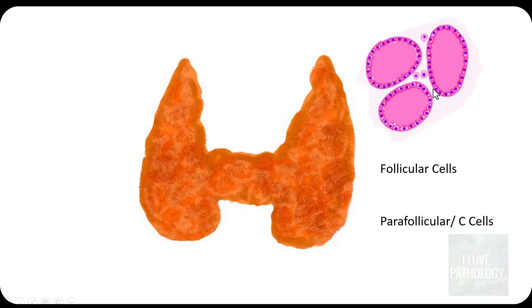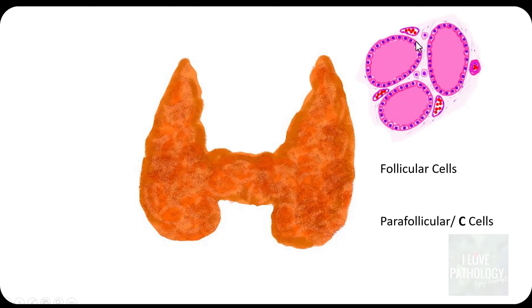The second important type of cells are the parafollicular cells. They are called parafollicular because they are situated next to, adjacent to, these thyroid follicles. They are also referred to as C cells. Apart from follicular cells and parafollicular cells, which are the major functional cells, you also have endothelial cells and stromal cells, but we focus on the first two.